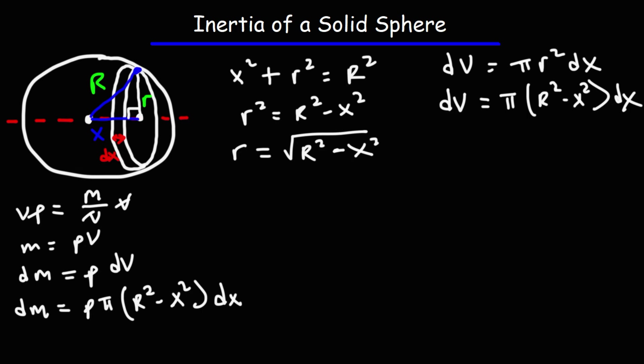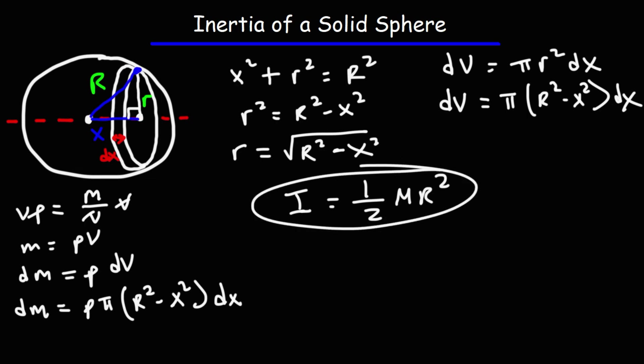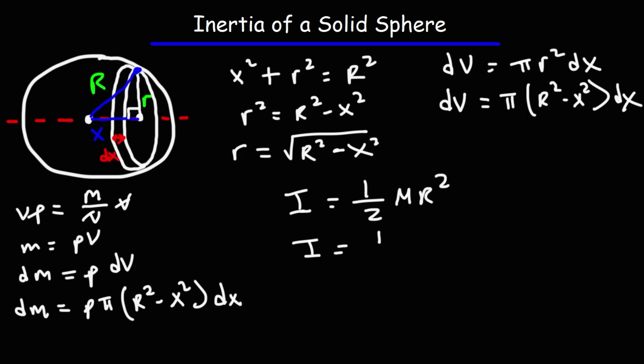The inertia of a disk is equivalent to the inertia of a solid cylinder, which is one-half mr². I have another video on YouTube that explains how to derive this formula. Since we're dealing with the radius of the disk, which we define to be lowercase r, the inertia of that disk is going to be one-half m · r².